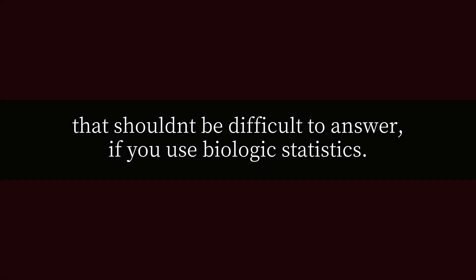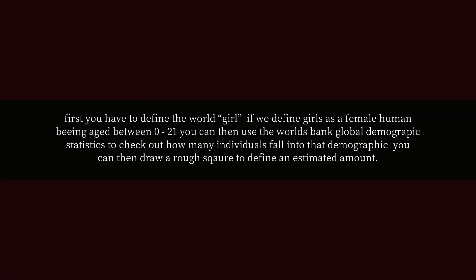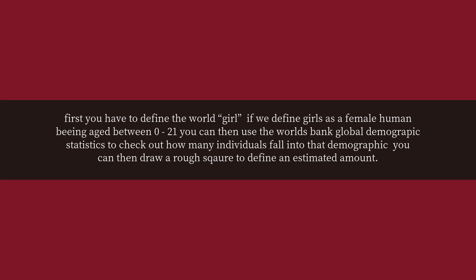How many girls live on the earth? That shouldn't be difficult to answer if you use biologic statistics and genetics. First you have to define the word girl. If we define girls as a female human being aged between 0 to 21, you can then use the World Bank Global Demographic Statistics to check out how many individuals fall into that demographic.